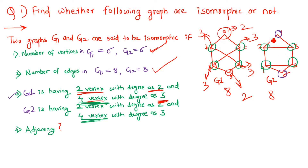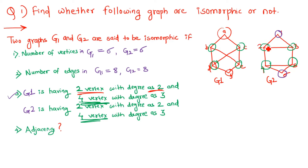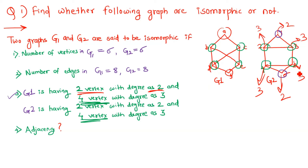We have to check the same with the second graph. In graph G2, we check how many vertices have degree 2 and degree 3. This vertex has degree 3, this has degree 2, this has degree 3, this has degree 3, this has degree 2, and this has degree 3. So there are 4 vertices with degree 3 and 2 vertices with degree 2 — the same as G1. This condition is also passed.